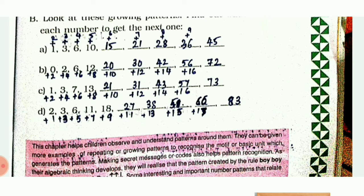The next example is 2, 3, 6, 11, 18. Here each number is added by consecutive odd numbers: 2 + 1 = 3, 3 + 3 = 6, 6 + 5 = 11. In this way the pattern is getting repeated.